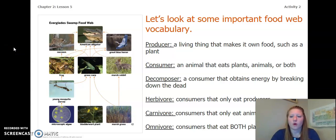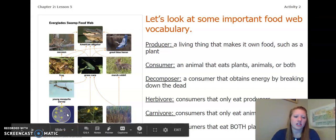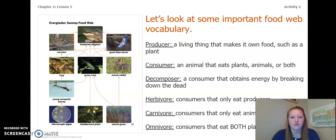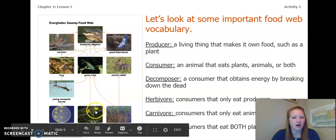Let's look at some important food web vocabulary. A producer is a living thing that makes its own food, such as a plant. So that would be our microscopic algae, our grass, or our bladderwort plant. A consumer is an animal that eats plants, animals, or both. So anything above our plants, these are all consumers.